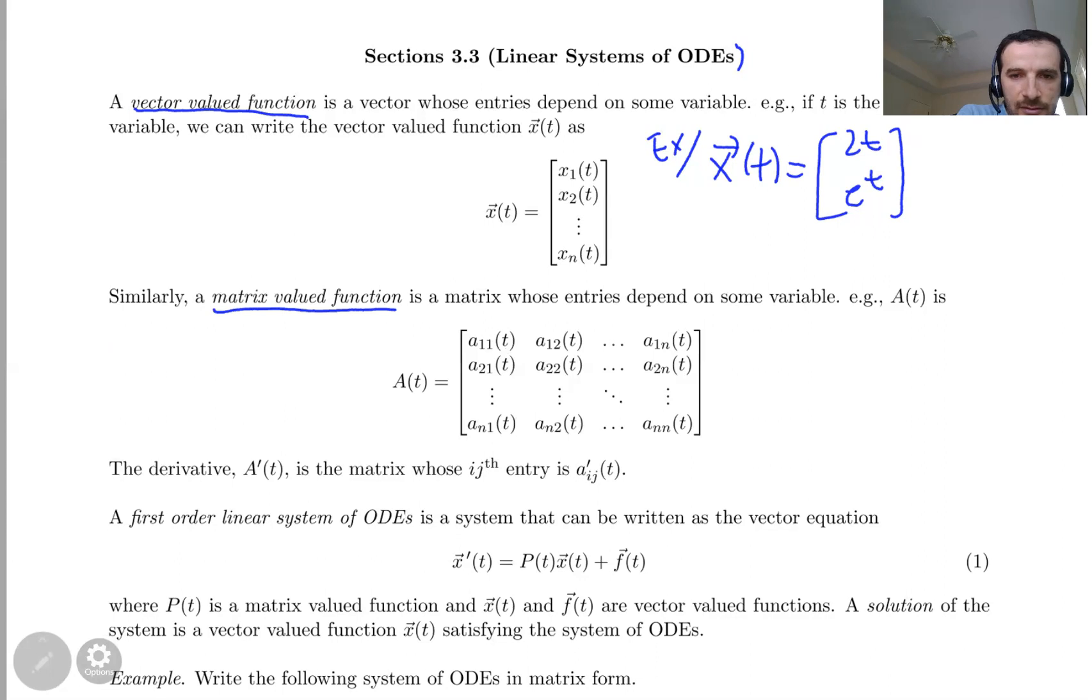Let me give you an example. A(t) equals e to the t, zero, sine t, t squared. This is a matrix-valued function. As you see here, we have zero. That's fine. We can have numbers in the entries of a matrix-valued function, because a number is also a function, a constant function. Whenever we have a matrix-valued function, we can talk about its derivative.